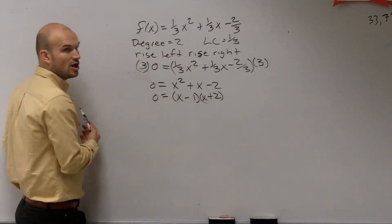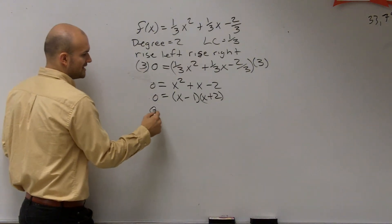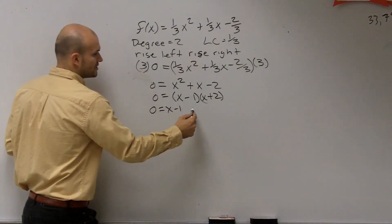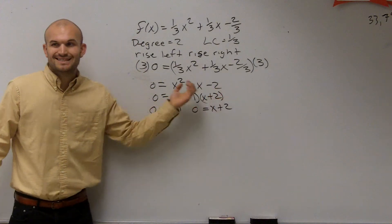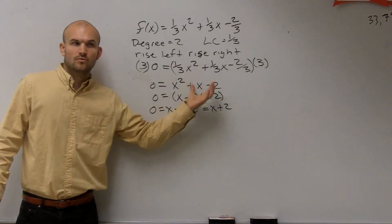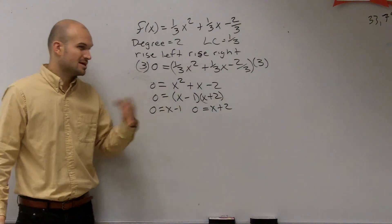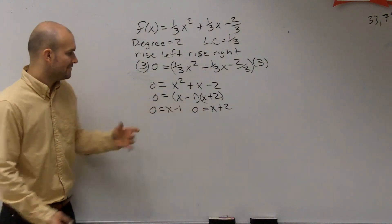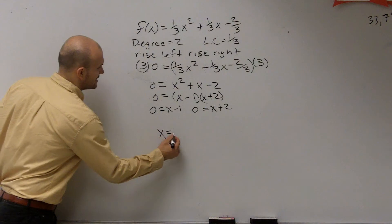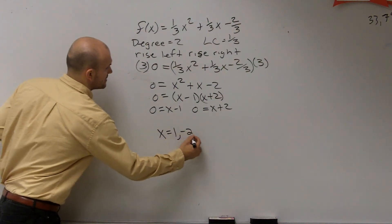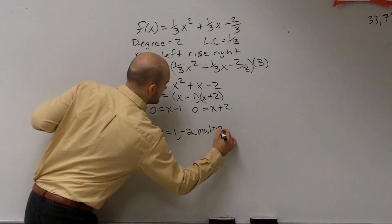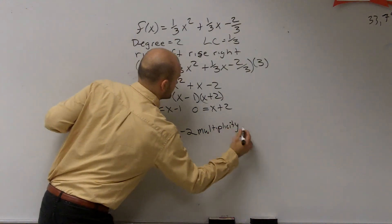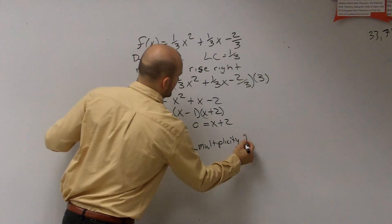So now, how do you finish solving this? The next thing you've got to do is set each of them equal to 0 by the zero product property. Remember we talked about whenever you have the product equal 0, one of them has to equal 0. We talked about that in your notes. So now we have this, and we can determine that x is going to equal 1 and negative 2 with a multiplicity of 1.